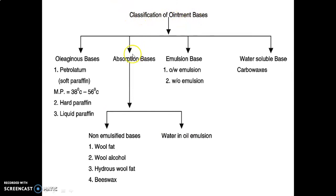Classification of ointment bases has four main classes: oleaginous base, absorption base, emulsion base, and water-soluble base. Oleaginous bases include petrolatum (soft paraffin) with melting point 38-56°C, hard paraffin, and liquid paraffin. Absorption bases are classified into non-emulsified bases and water-in-oil (W/O) emulsion. Non-emulsified bases include wool fat, wool alcohol, hydrous wool fat, and beeswax.